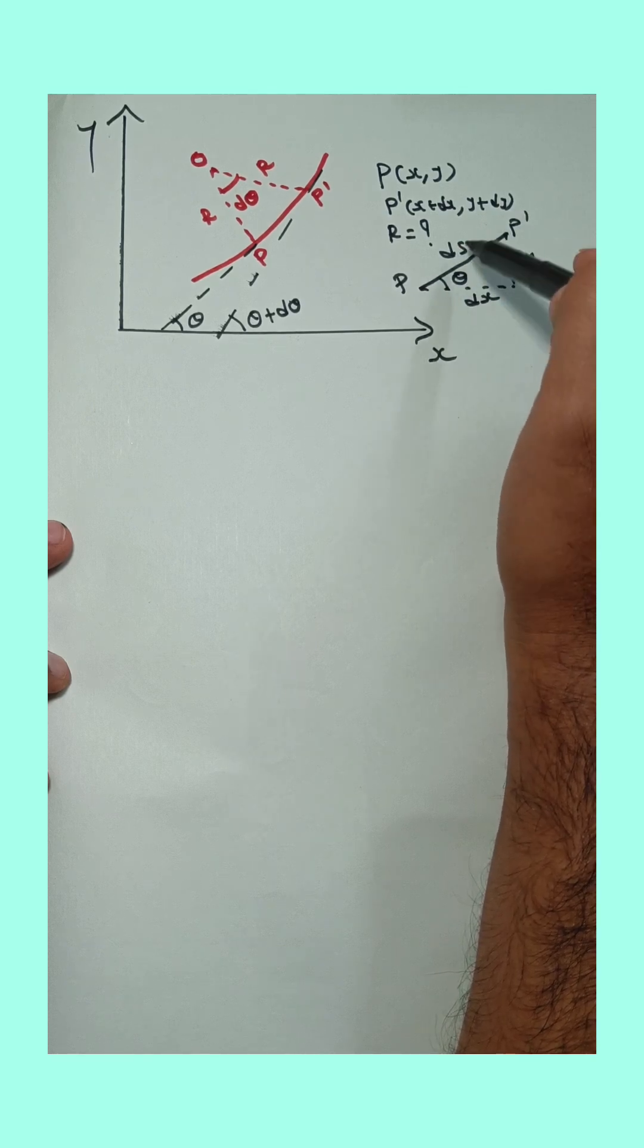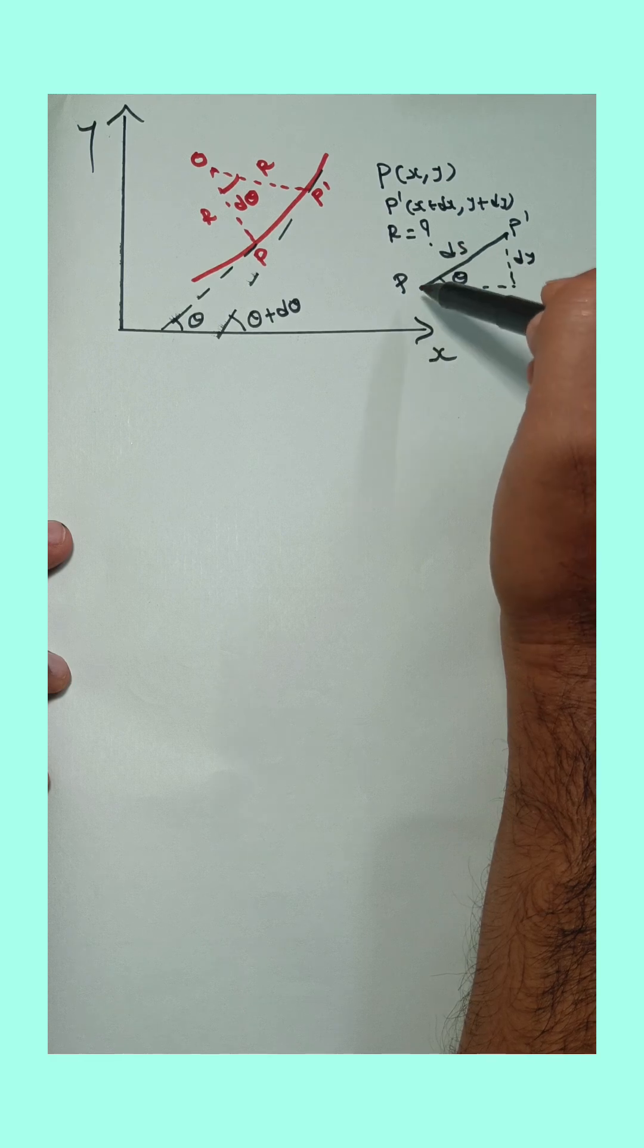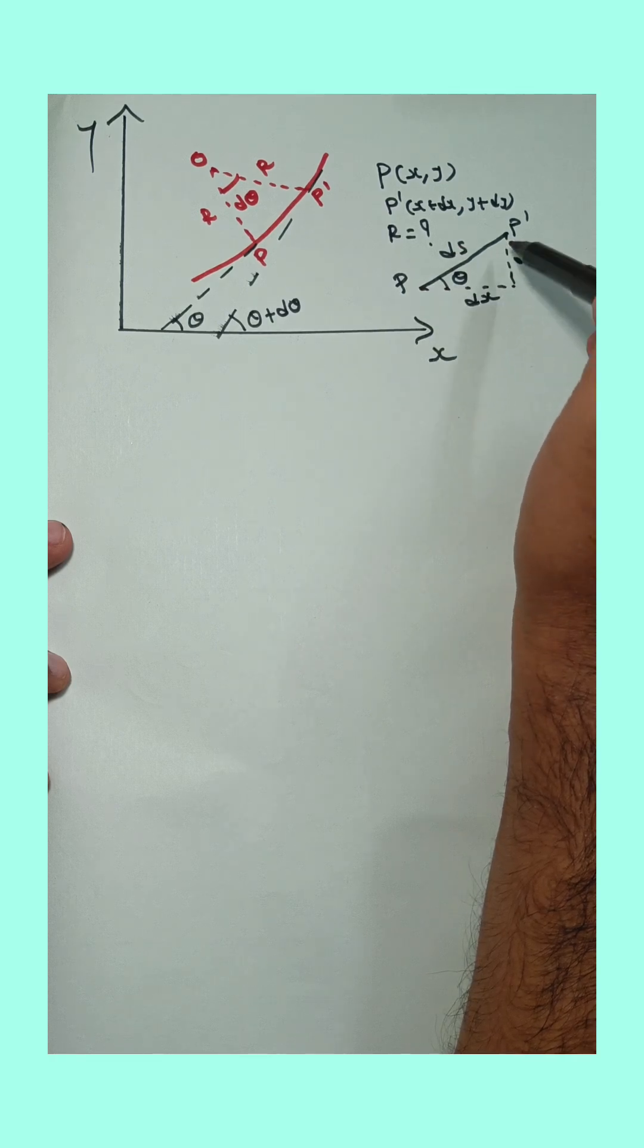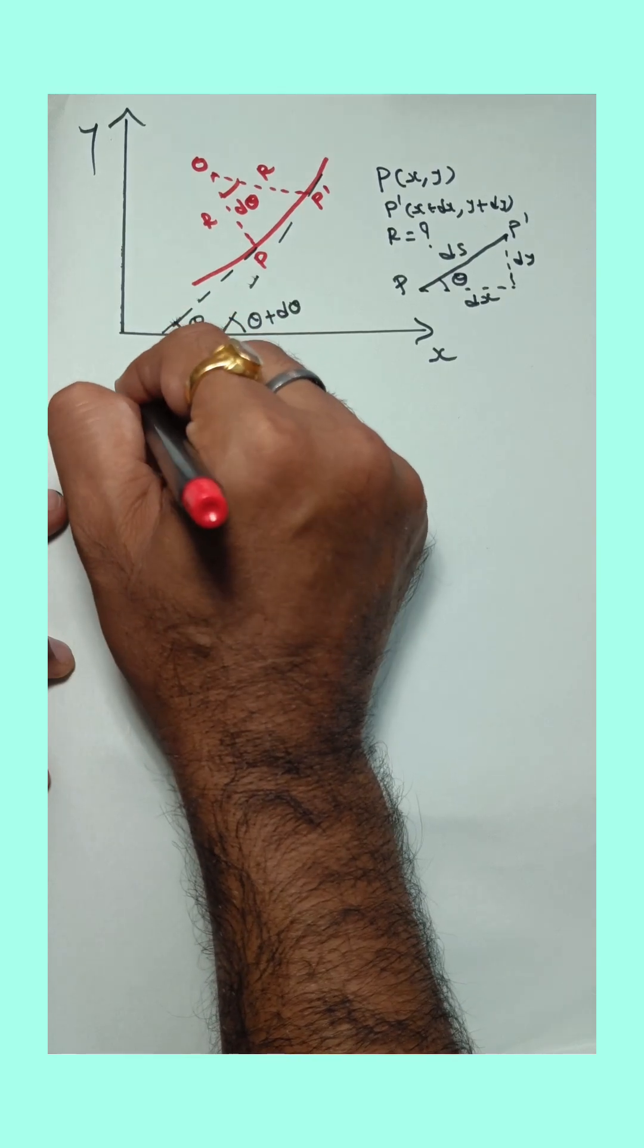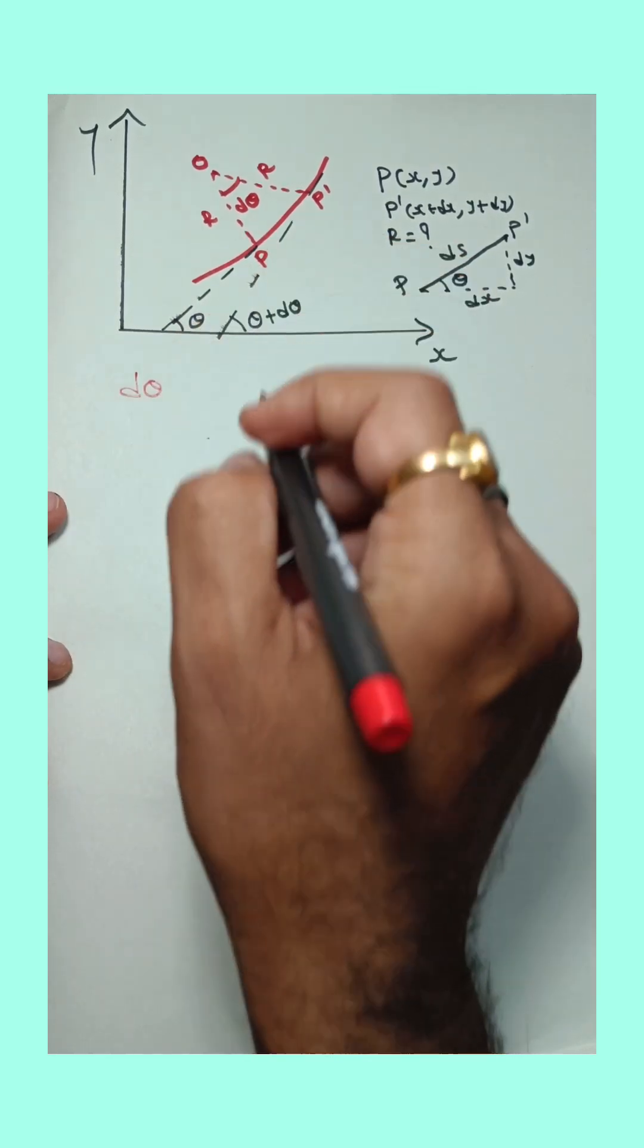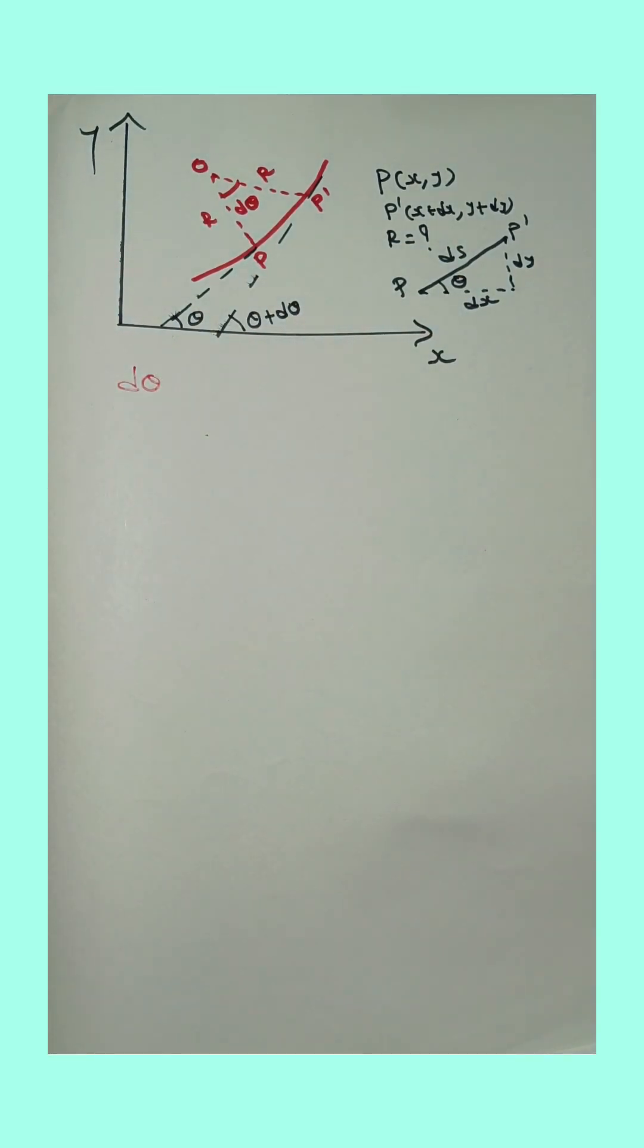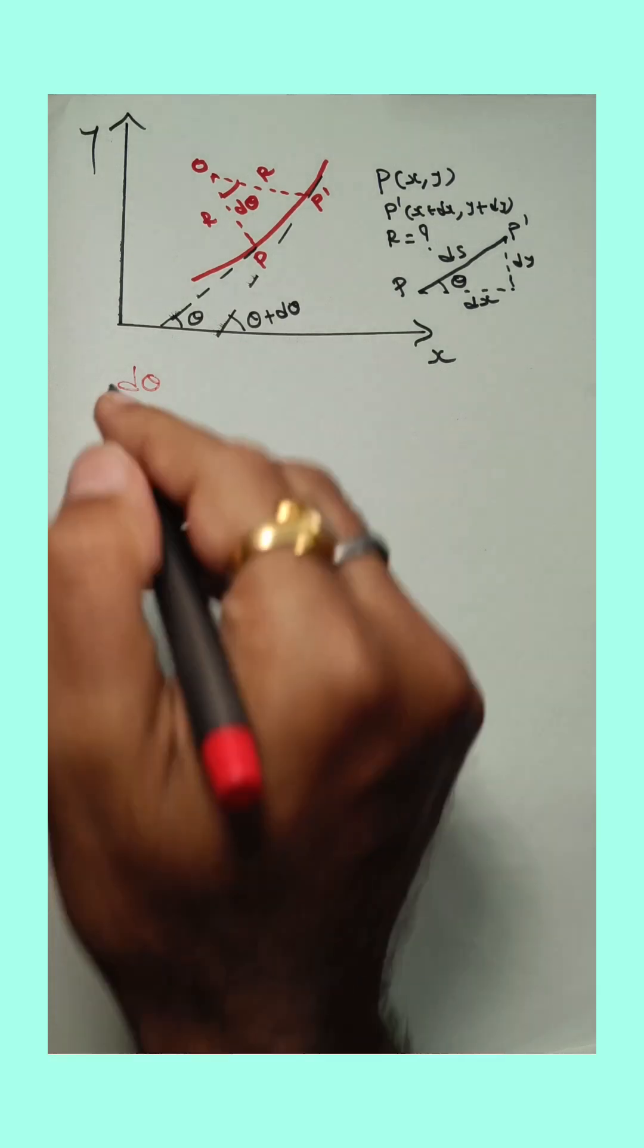Here P and P dash are very much near to each other, so P to P dash line is considered a straight line and the distance between P and P dash point is supposed ds. Horizontal distance dx, vertical is dy, and this angle is θ. Now here dθ, it means angle in radian, is equal to arc upon radius.